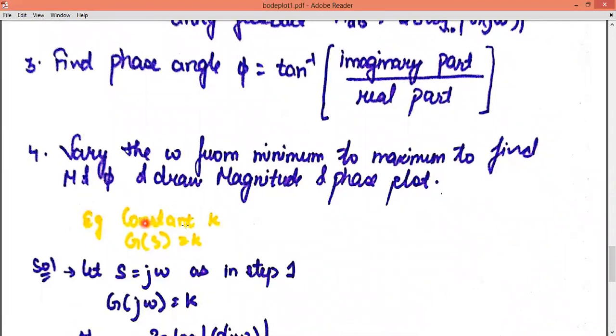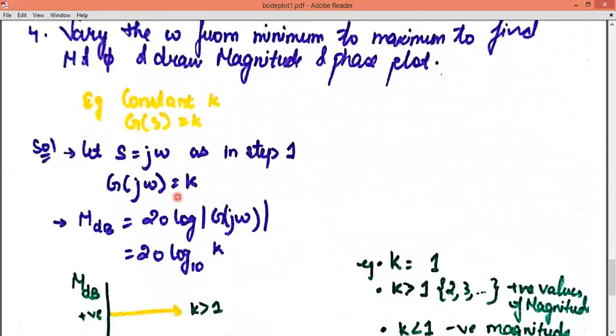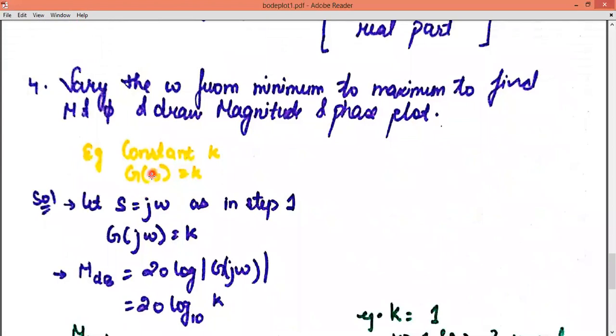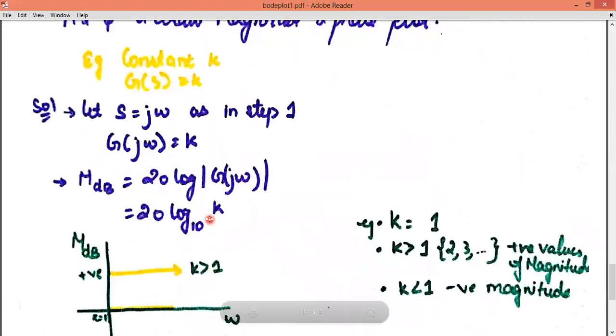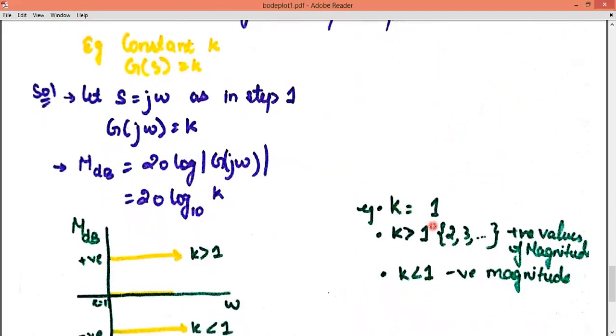Let's take a small example. Suppose you have a function g(s) = k. What do you have to do? As I told you in the first step, first of all, you have to replace S with jω. So if you have g(s), then you replace S with jω. What was the next step? To find magnitude. It is a direct formula. What do we write in magnitude? 20 log|g(jω)|. What did we have in g(jω)? We have k.